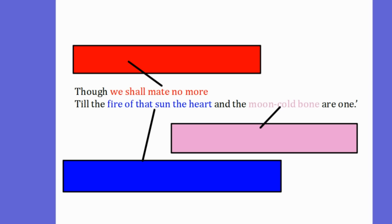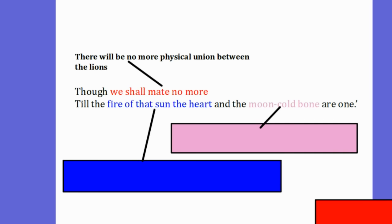We have the lines, though we shall mate no more, till the fire of that sun the heart and the moon cold bone are one. Of course, though we shall mate no more is a reference to there being no more physical union between the lions.